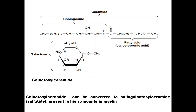Structurally, galactosyl ceramide has a sphingosine backbone. Attached to the sphingosine is a 24-carbon fatty acid, cerebronic acid, forming the ceramide group, and galactose is attached. So for galactosyl ceramide you have galactose, cerebronic acid as the fatty acid, and sphingosine.